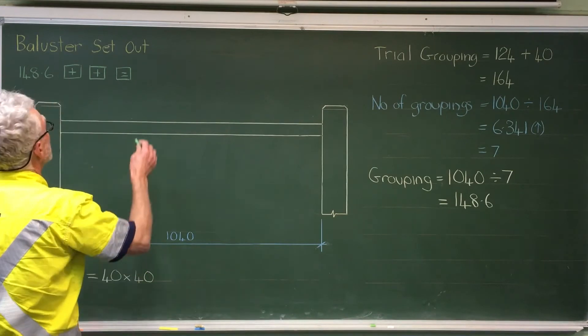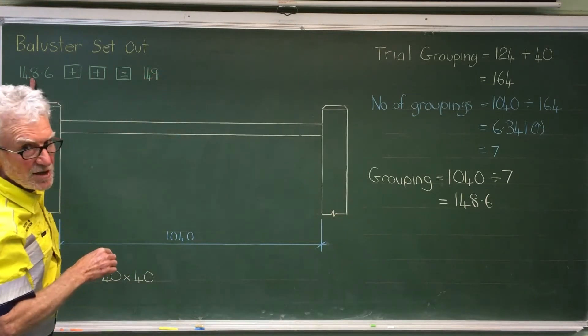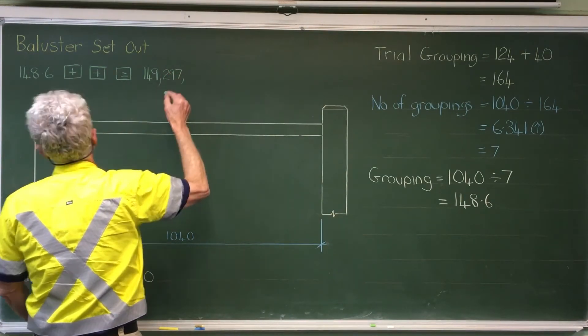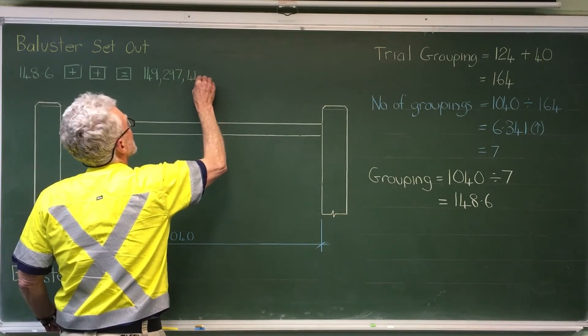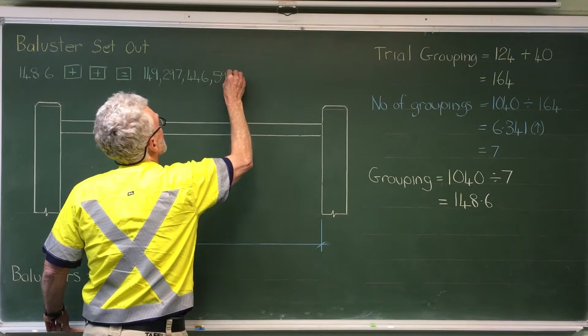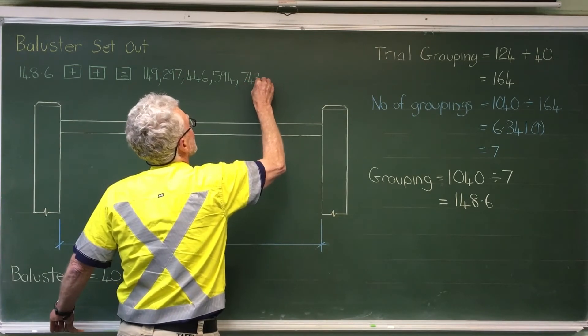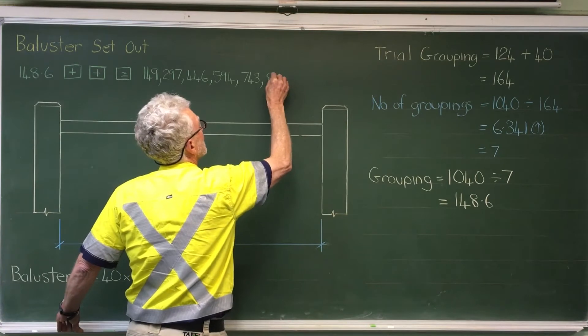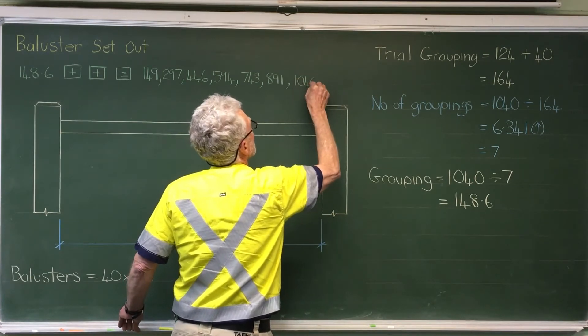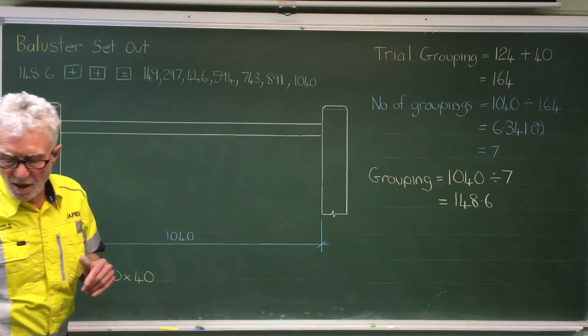The answers you would get to the nearest mill would be 149, which is that one to the nearest mill. Then you'd get 297, 446, 594, 743, 891, and 1,040. So everything's looking okay at this stage. I'm going to set those out now at that spacing across this handrail.